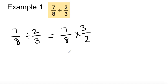Seven times three, twenty-one. Eight times two, sixteen. And what do you have left? How many? Now, you have to turn it back into a mixed number. So, sixteen into twenty-one is one. And what's left over? Five sixteenths.